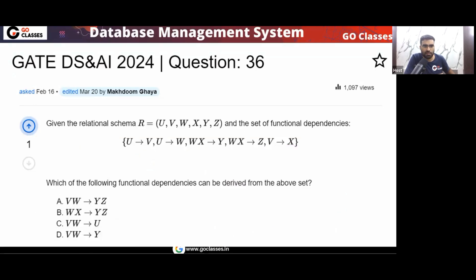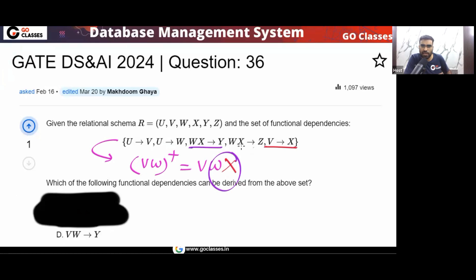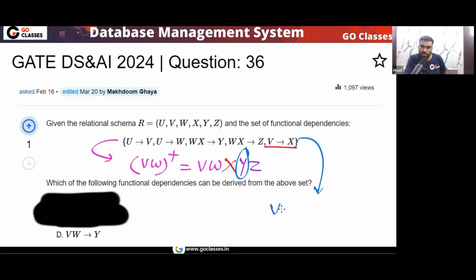What about option D? For option D, in this FD set find the closure of VW. VW can determine VW. V can determine X. Next, VWX — WX can determine Y and Z. Nothing else. So from this FD set, VW can determine Y. So option D can definitely be derived.